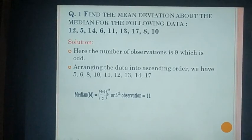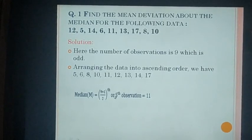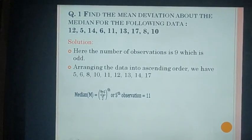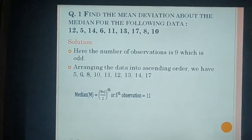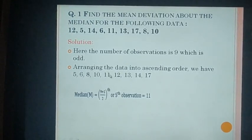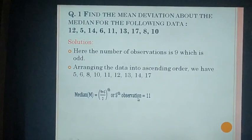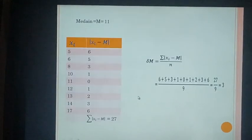The formula to find median is M = (n+1)/2 th observation. With n = 9: (9+1)/2 = 10/2 = 5th observation. Counting through the ordered list: 1, 2, 3, 4, 5 — the 5th observation is 11. So the median M = 11.